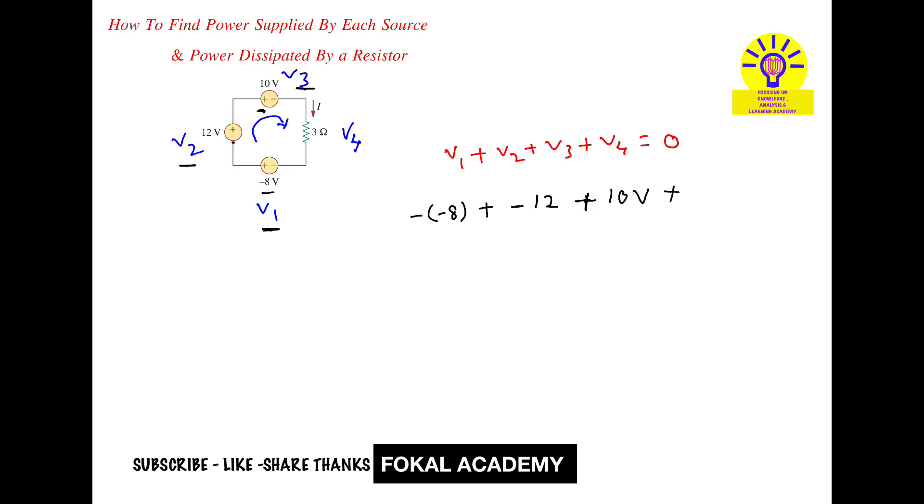Next, the resistance value is taken as positive, that is IR according to Ohm's law. R is 3 Ohms, so I into 3, that equals zero.